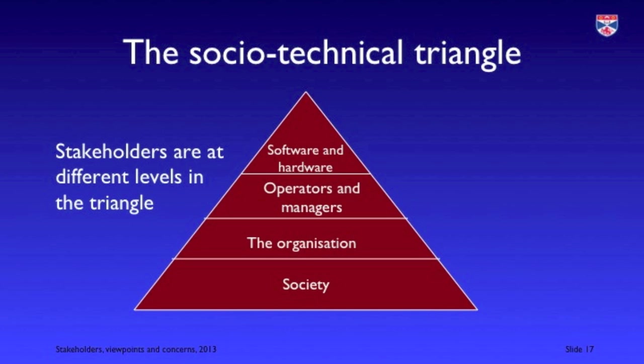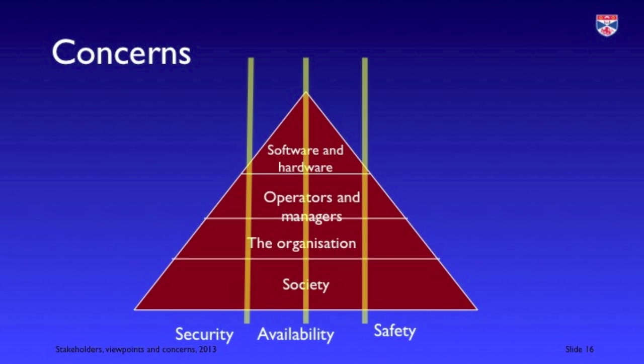We can look at this using what's sometimes called the socio-technical triangle, where we have classes of stakeholders: operators and managers, the organization as a whole, the broader society where requirements may come from a system regulator, and the requirements that come from the software and hardware being used. Cross-cutting all of these are concerns. The reliability of a system is a concern — it affects and is influenced by all of these. Reliability, availability, safety, security, and resilience — the dependability issues — are all cross-cutting and don't come from just a single viewpoint.